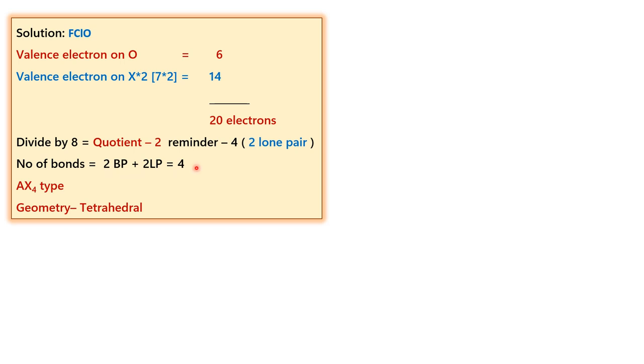When a molecule adds up to 4 as the number of bonds, then it is of the AX4 type. If it is AX4, the geometry of the molecule is tetrahedral.